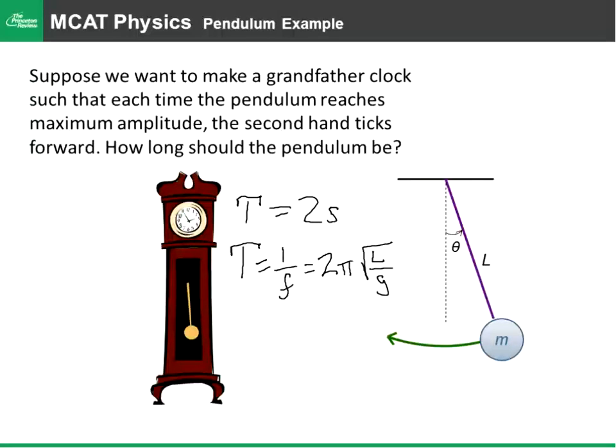All right, so what we're going to do at this point is set equal these two values. We have two is equal to 2π root L over g. So the twos cancel, and we can write this as one over π is equal to square root of L over g. At this point, I would approximate π as three.